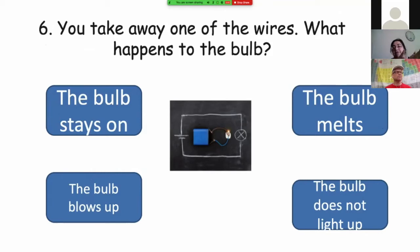Anyway, we have the same electrical circuit. The bulb is lit up. So if I remove just one of the wires, what happens to the bulb? It doesn't change? The bulb stays on? Or the bulb melts? Or no, probably the bulb blows up? Or no, nothing. The bulb does not light up. What happens?